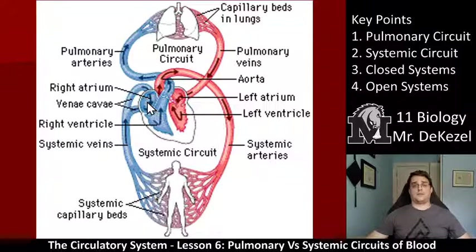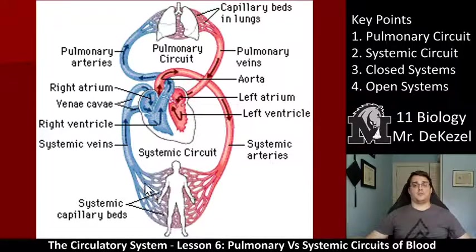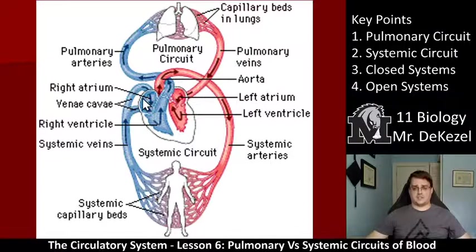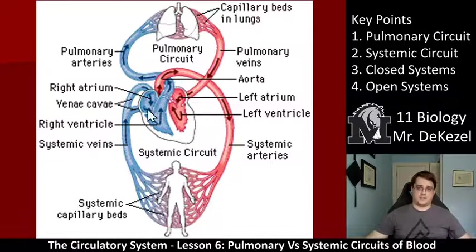The red part represents oxygenated blood and the blue part represents deoxygenated blood, but that is not the cutoff for the circuits — that is the heart. So heart to lungs is the pulmonary circuit, and heart to the rest of the body is the systemic circuit.